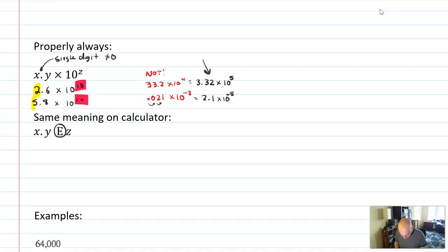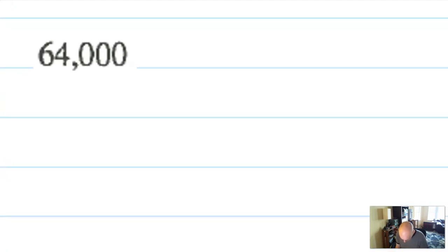Okay. I'm going to spend the rest of this video just doing examples. So, the first set of examples is going to be putting these numbers into scientific notation. Okay. So, here's how you think about it. This is 64,000.0.